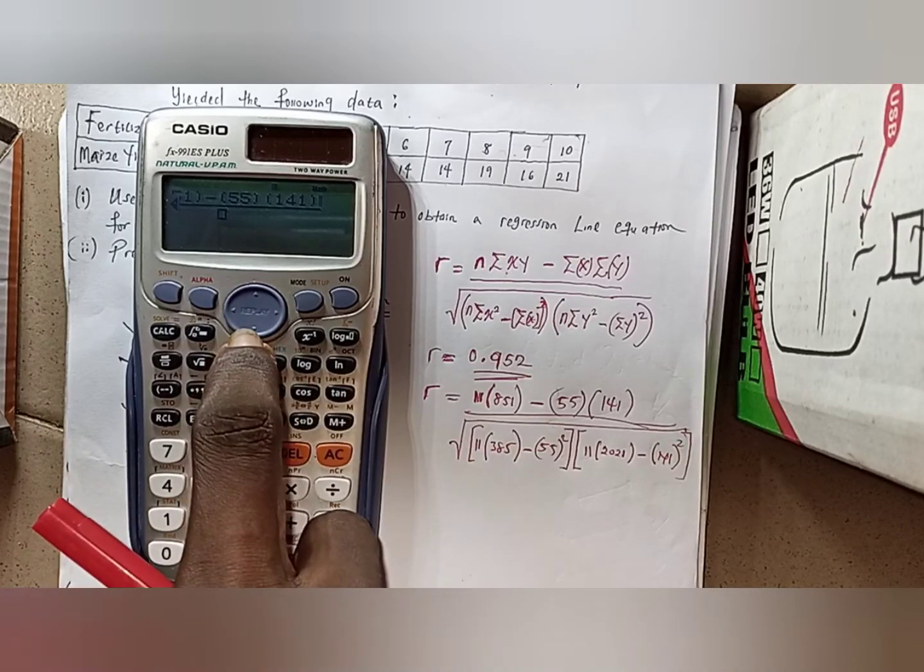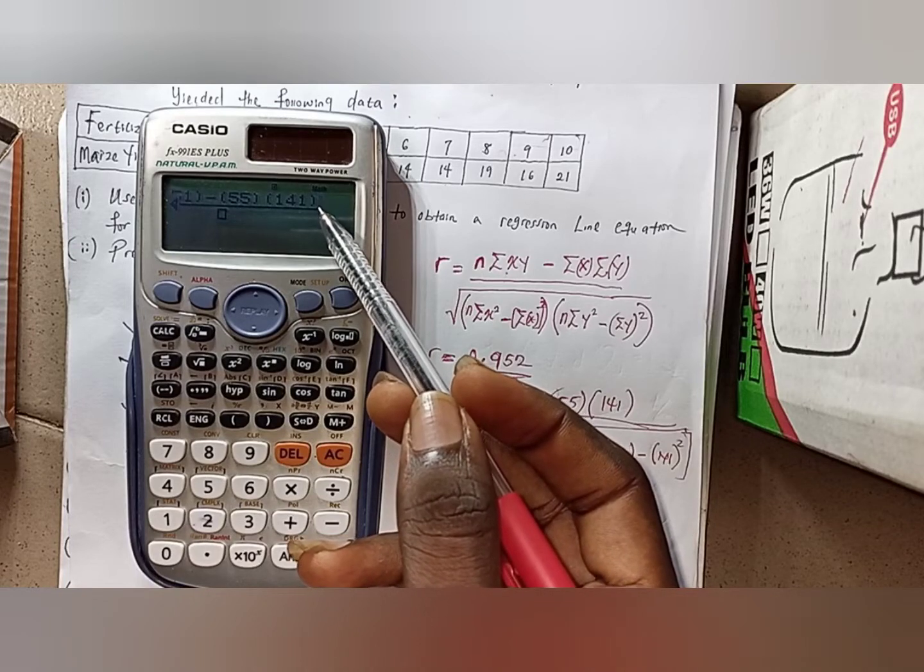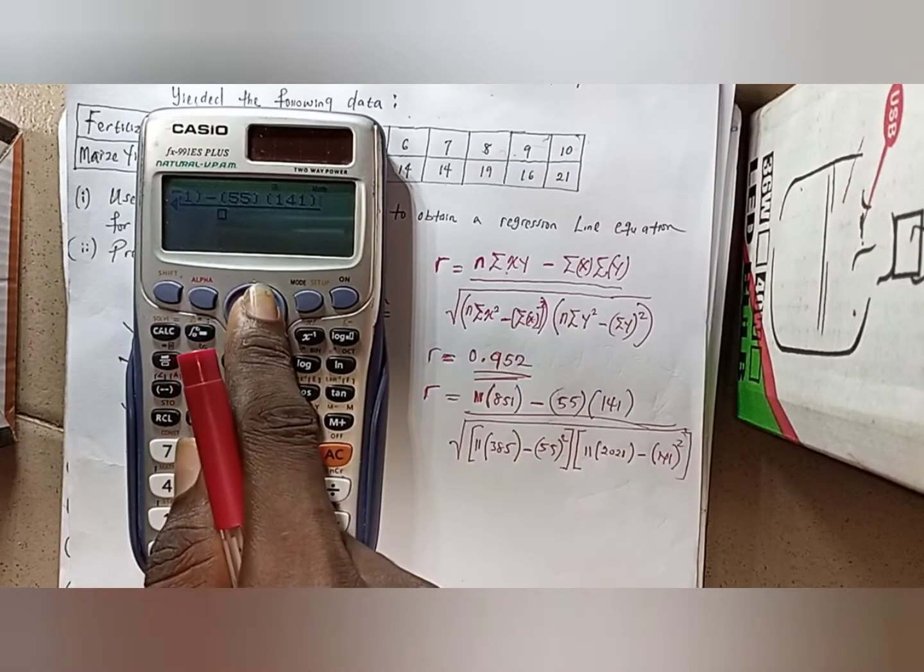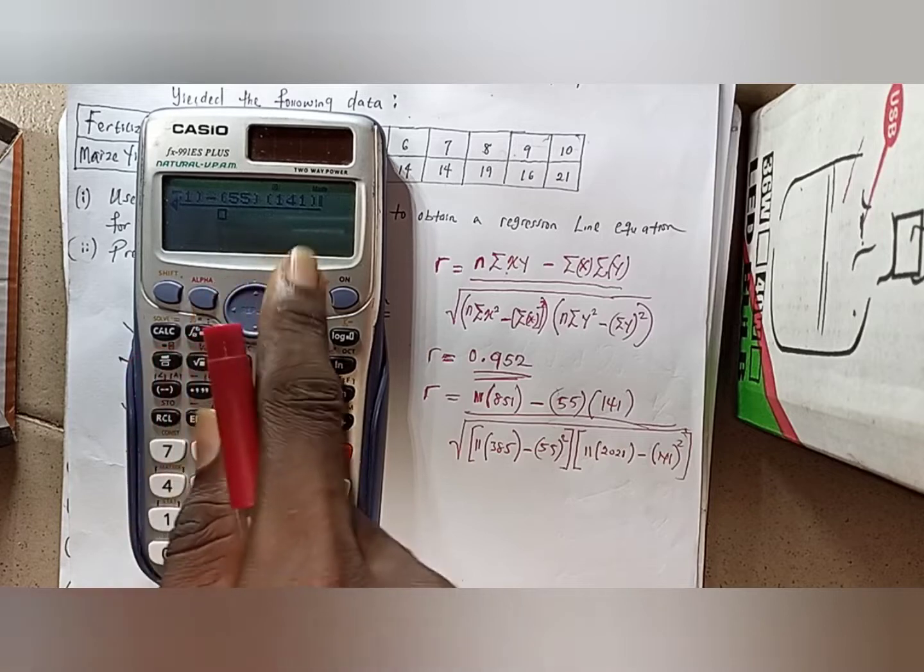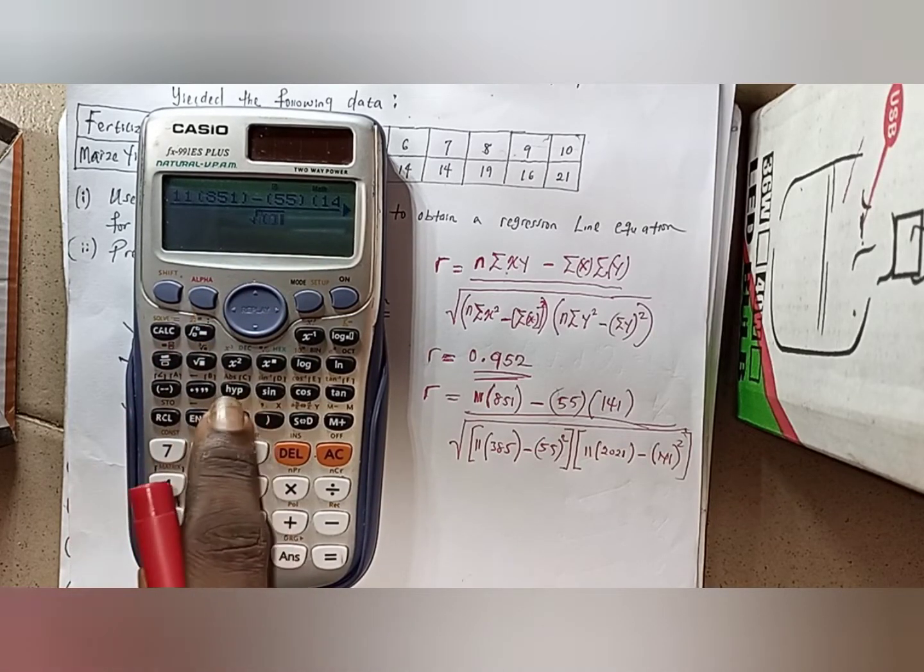To come down, you press this down button or you press the right button. As you can see, you have a blinking vertical line here. Then just press either the down button or the right button.